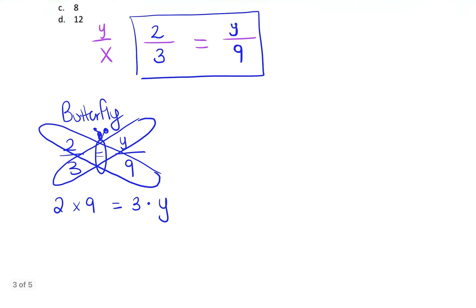So 2 times 9 is 18. Bring down the equal sign. And then 3 times y is 3y. And now we have to solve for y.